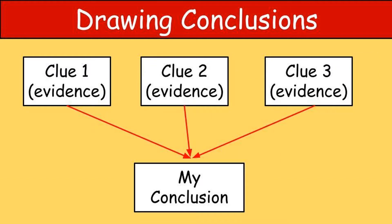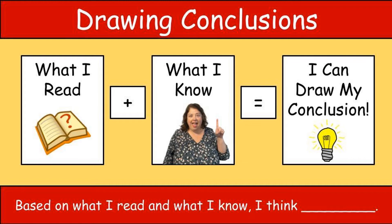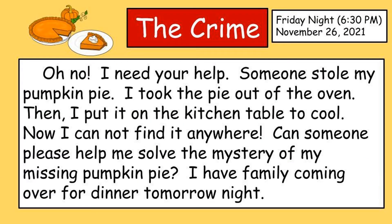Check out this graphic organizer. See how you can put three clues together to form your conclusion on the bottom. If you find more clues, just add more boxes. You're a detective just like me. After that, think about what else you know about the topic. You might be able to use your prior knowledge along with the clues you found in the text to help you draw a conclusion as to what the author is talking about. Let's go back to the scene of the crime so we can look for evidence to help us solve our mystery.